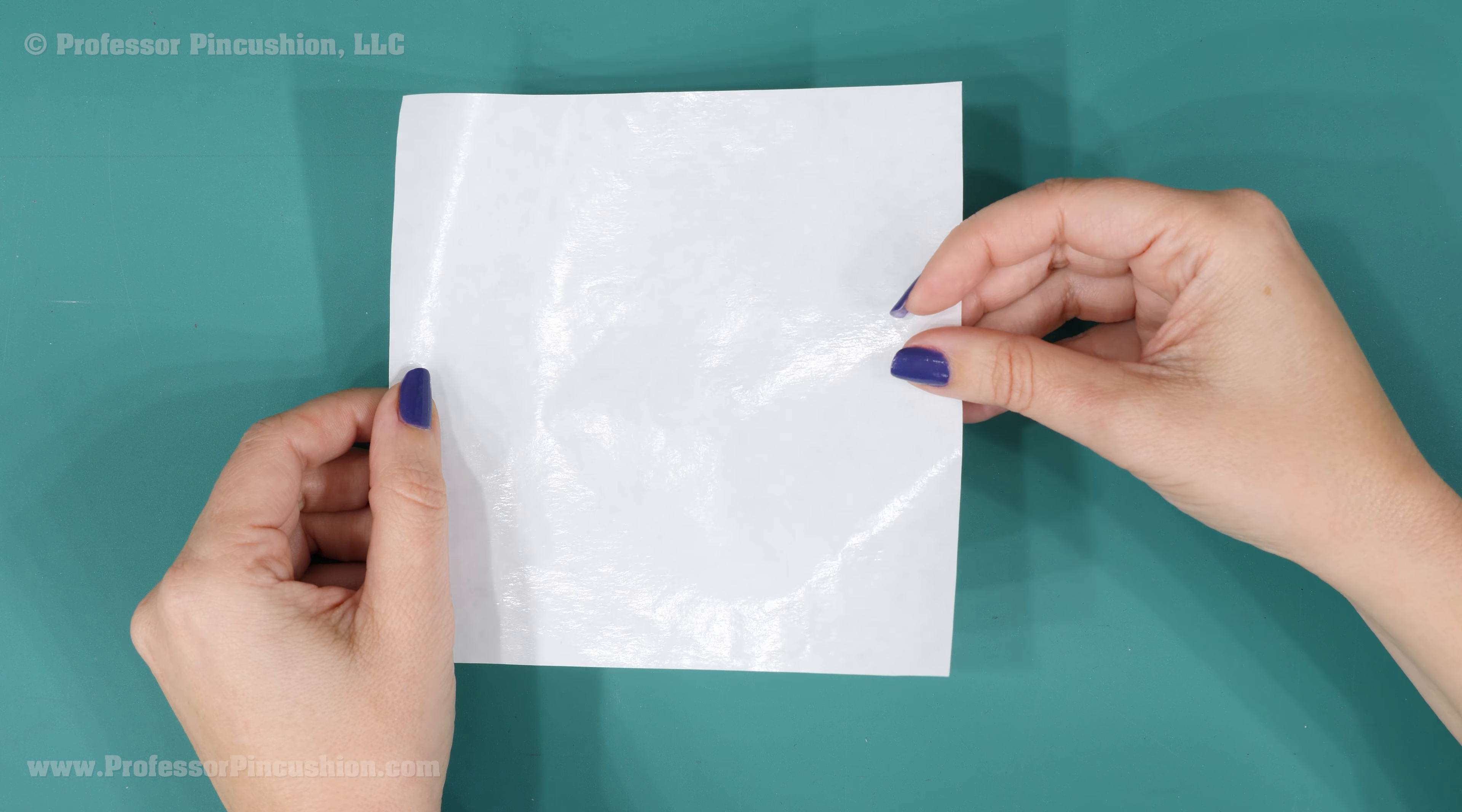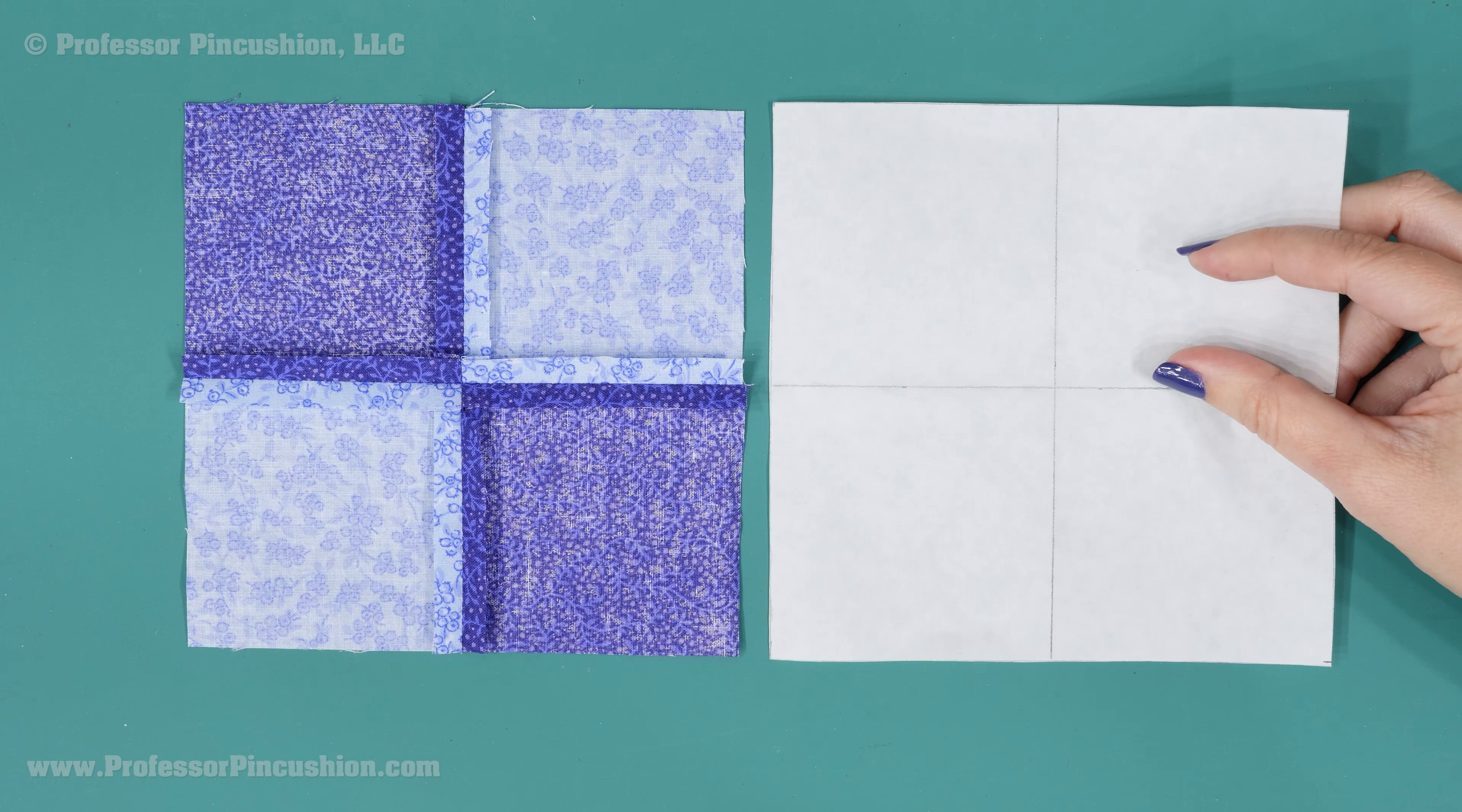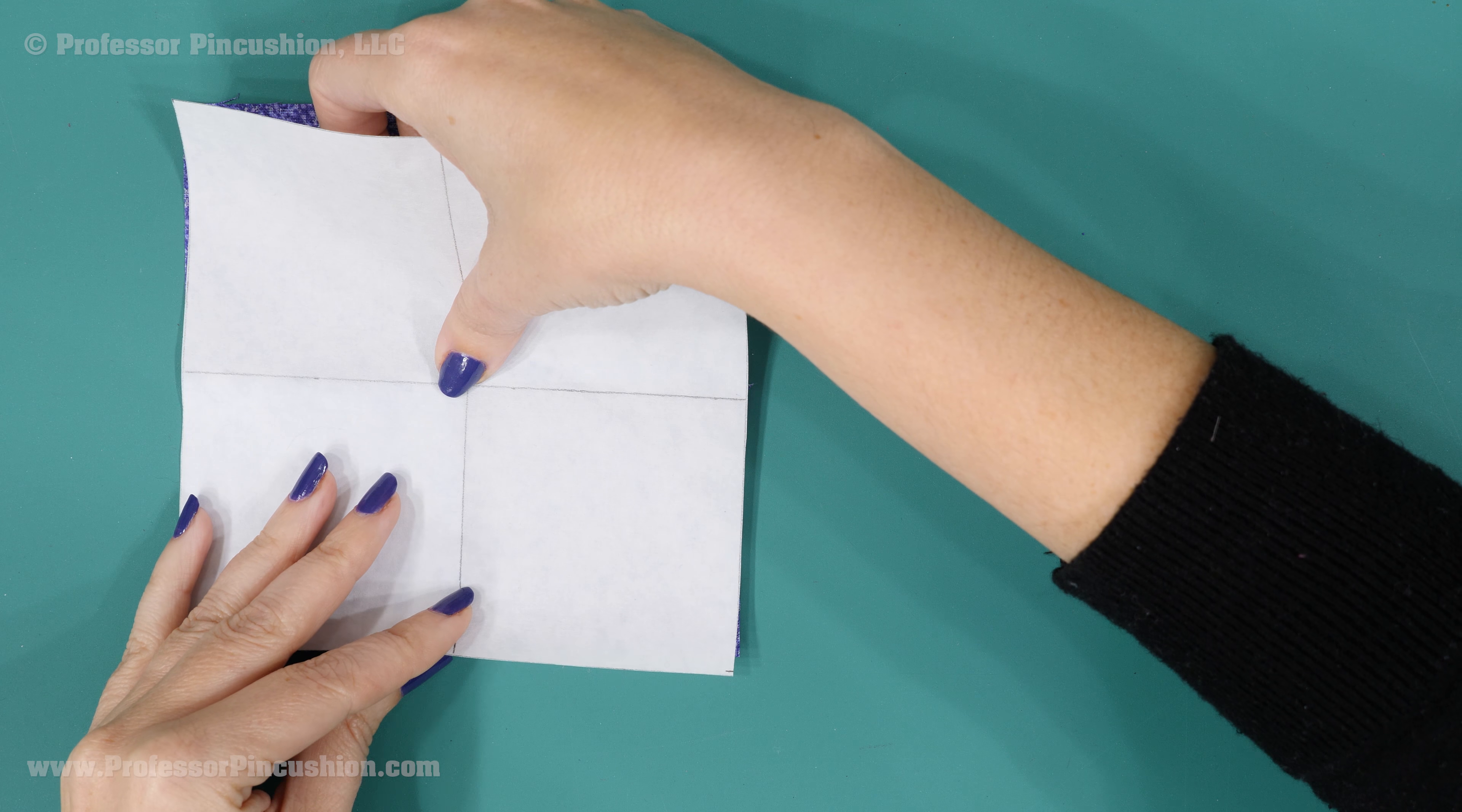Freezer paper has a waxy side and a paper side. On the paper side, draw guidelines for yourself like lines marking the center or diagonal lines. Place the wax side of the freezer paper to the wrong side of your block using your drawn lines to match up your block as well as you can.